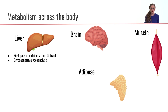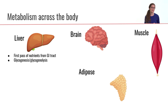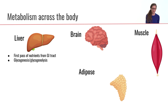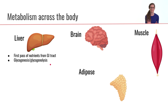The liver can perform both glycogenesis and glycogenolysis. The liver is one of the few organs in the body that can form glycogen, the storage form of glucose. Glycogenesis is building glucose into glycogen, into the storage form. Glycogenolysis is when we want to take that glycogen and break it apart so we can release glucose into the bloodstream.